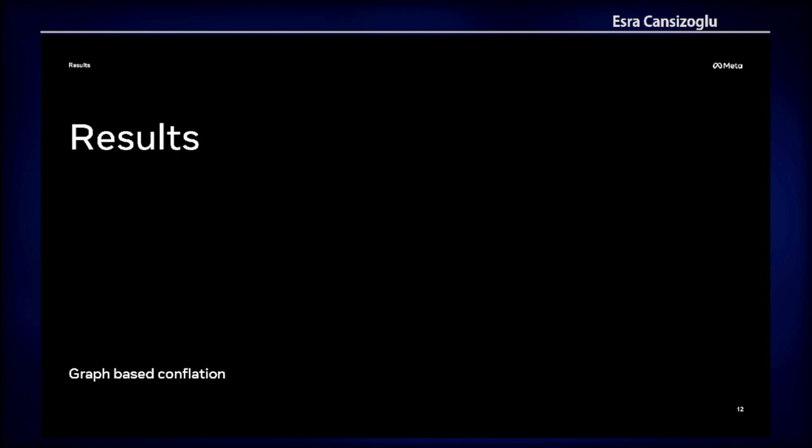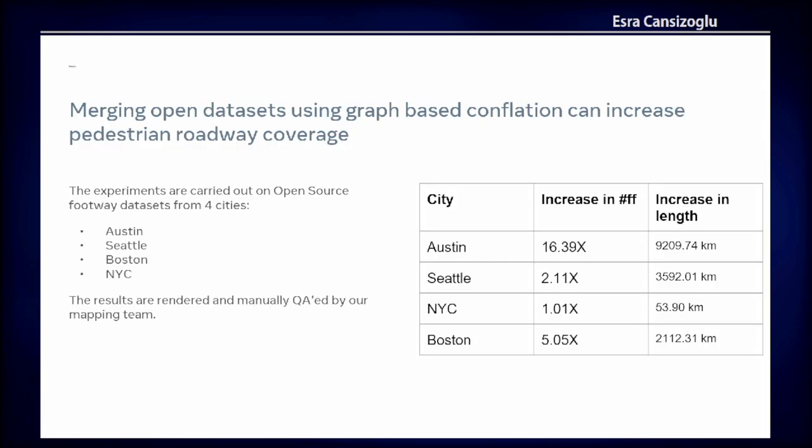The conflation itself is quite promising. We applied graph-based conflation on more than four cities, with each result reviewed and curated by our mapping teams. We found significant increases in pedestrian way coverage: for example, Austin had more than 16 times increase, Boston had around five times increase. Cities not listed here — Denver and Houston — had even more than 30 times increase in coverage of pedestrian ways.